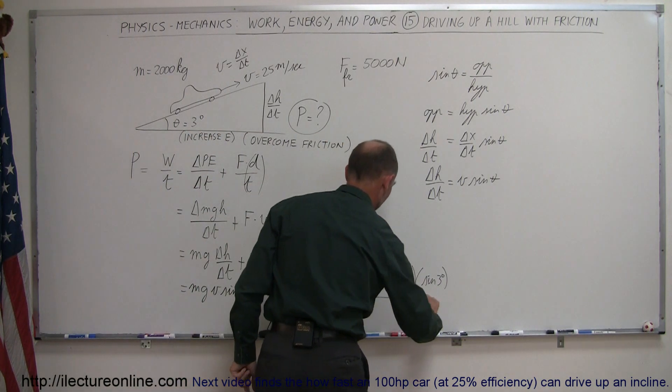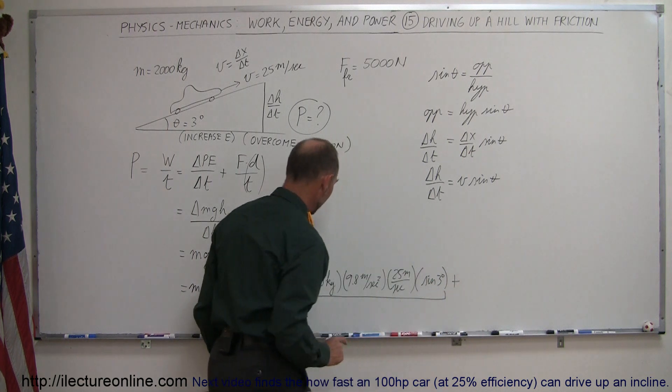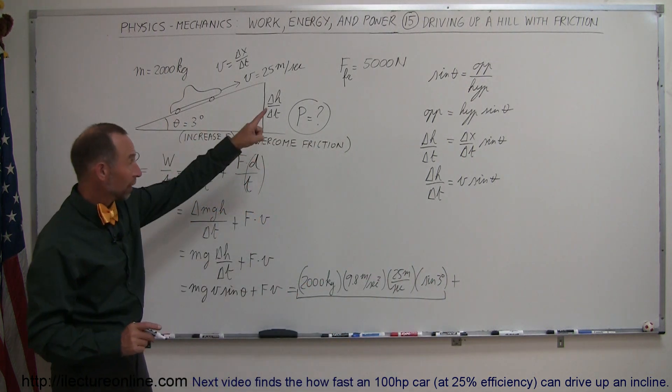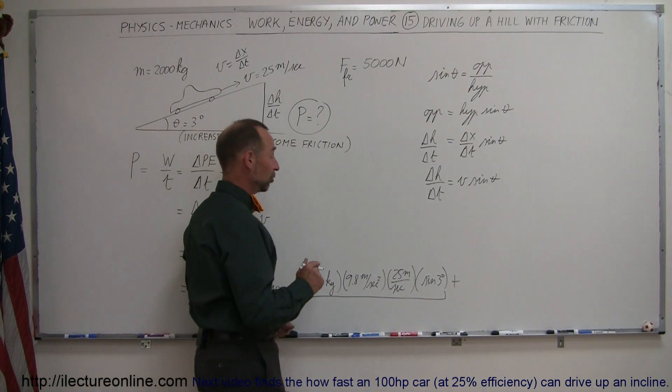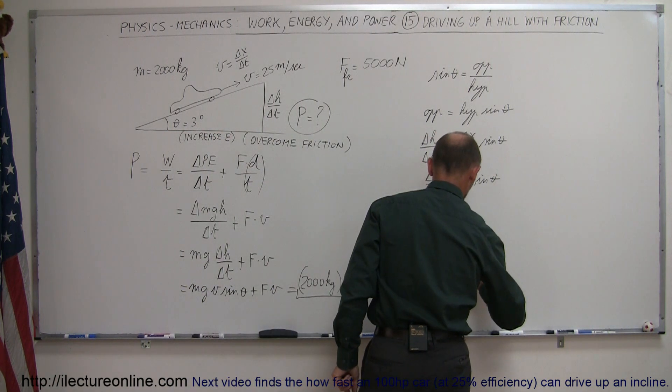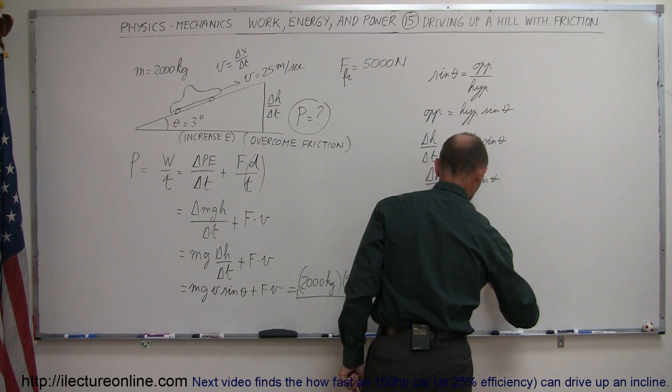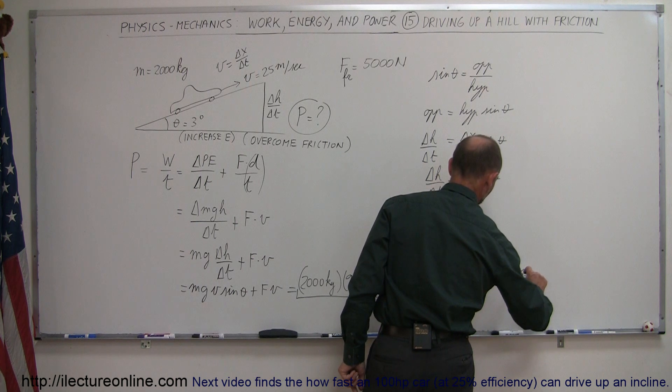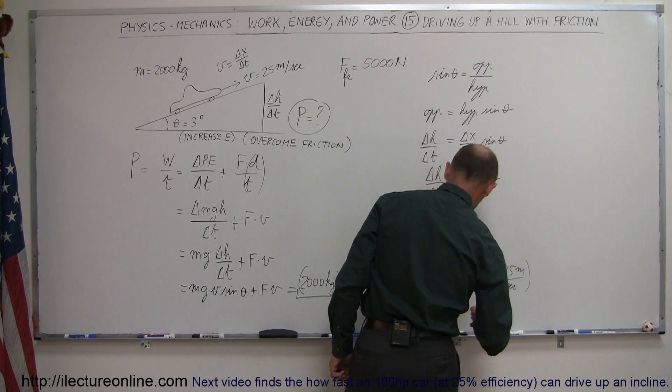This would be the amount required for the car to gain height. We add to that the force to overcome friction, so you have to have an equal force pushing that friction force, which is 5,000 newtons, multiplied times the velocity of the car, 25 meters per second.